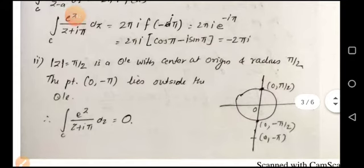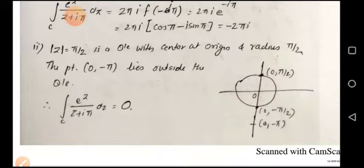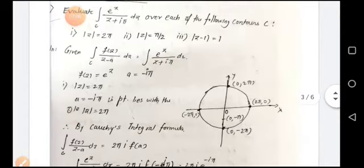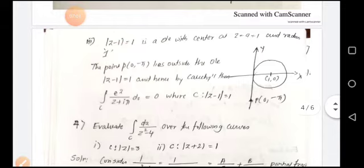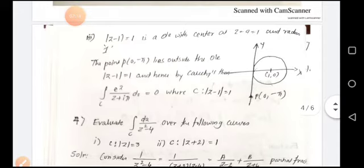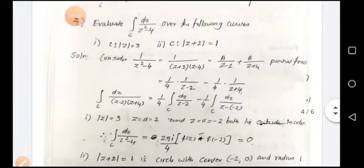For the second contour |z|=π/2, it is a circle with center at origin and radius π/2. The point (0,-π) lies outside this circle, so the integral equals 0. For the third contour |z-1|=1, it is a circle with center (1,0) and radius 1. The point (0,-π) lies outside this circle as well, so the integral equals 0.